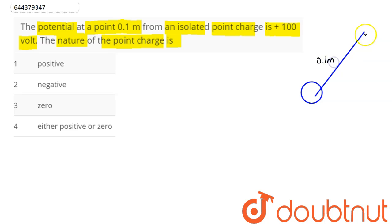Here the potential at this point is 100 volt. So we need to find the nature of this isolated point charge. That is, is it positive or negative.